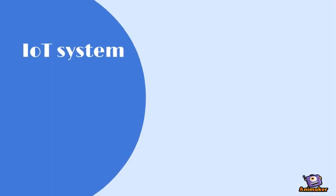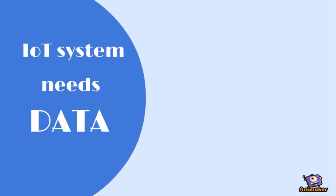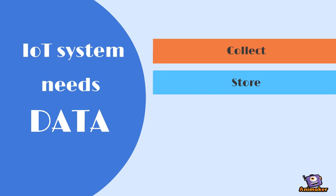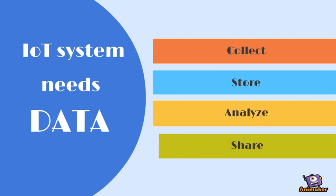The core of every IoT system is data — lots of data. The architecture of an IoT system has to provide an ability to collect data from sensors, store data for analysis, analyze the data to gain insights, and share the gained results with other systems or users.